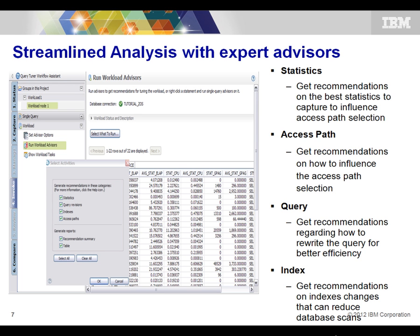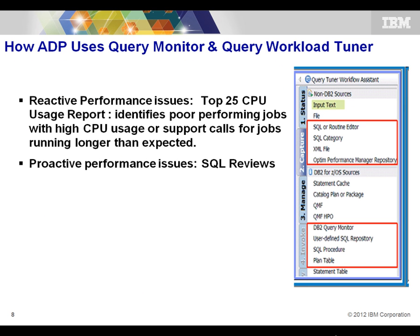Application performance is tightly tied to customer satisfaction, revenue generation, organizational productivity, and infrastructure costs. Unfortunately for ADP, the performance and scalability of application SQL was getting less and less attention in pre-production. Aggressive project delivery schedules, increasing use of application frameworks to generate SQL, and the disconnection between development and DBA organizations were contributing factors. Once in production, application performance was not set for life — applications slowed down over time due to increased workload and changes in the database environment, often outgrowing original design parameters.